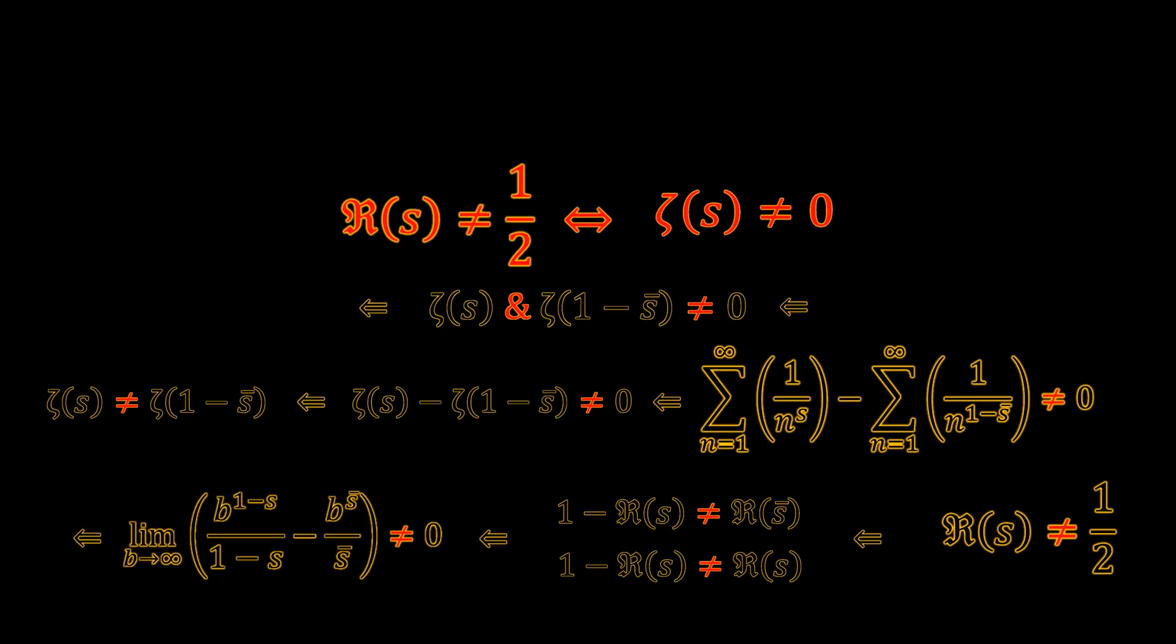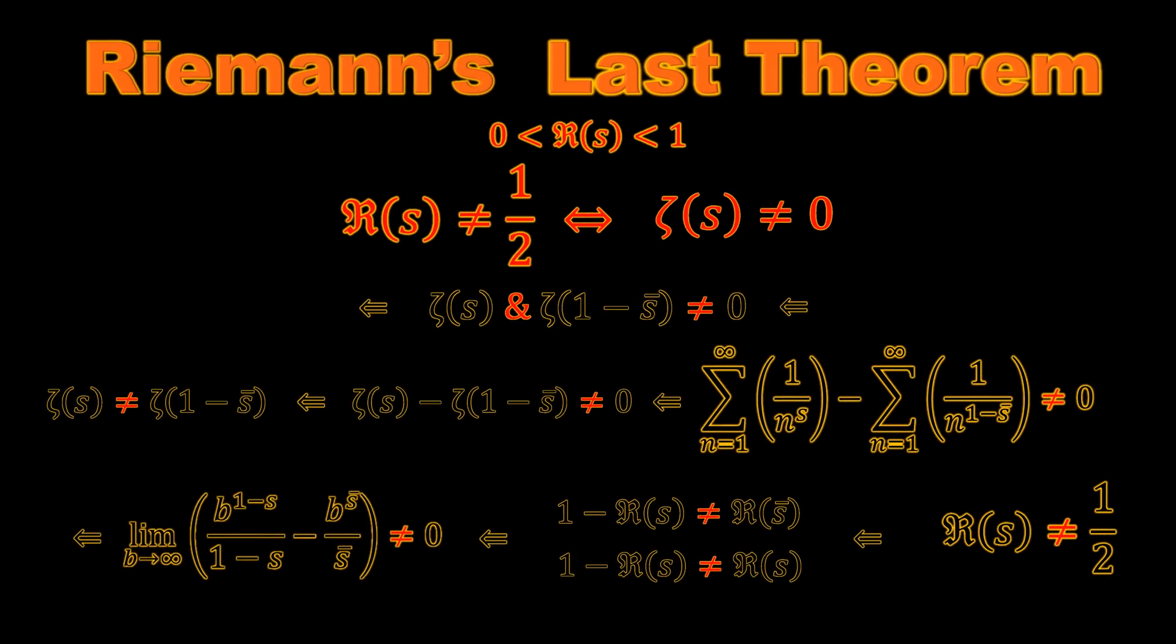we prove that if the real part of s is not equal to one-half, the zeta of s cannot be equal to zero. This completes the proof.